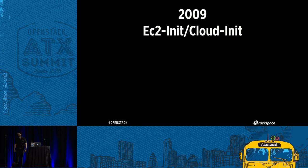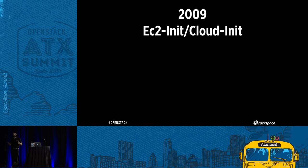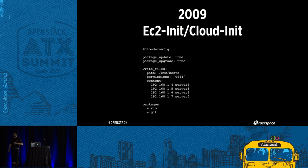In 2009, something called EC2 init came out, which became the cloud-init project — basically the application we find installed on almost every single cloud instance we spin up, whether on Google Cloud, Azure, Rackspace, or AWS.